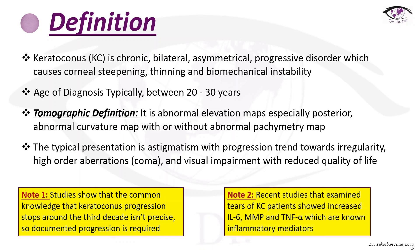Recent studies examining the tears of keratoconus showed increased interleukin-6, MMP, and TNF-alpha, which are inflammatory mediators. So from now on, we cannot consider keratoconus as a non-inflammatory disease — it is actually an inflammatory progressive disorder.